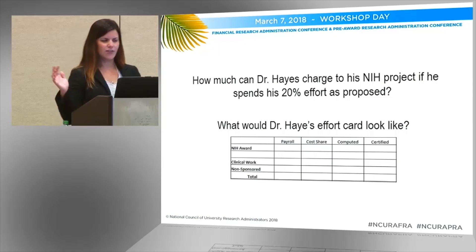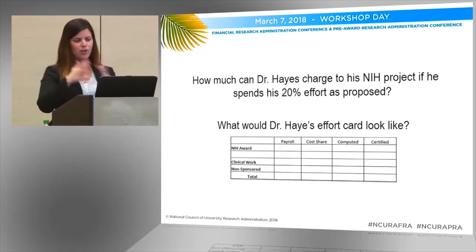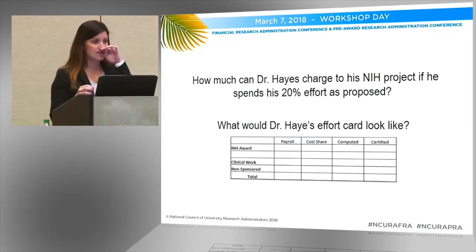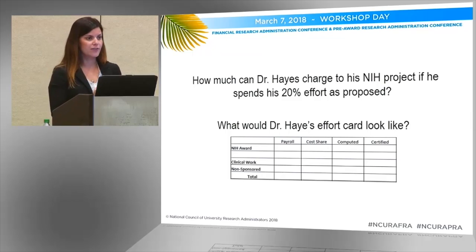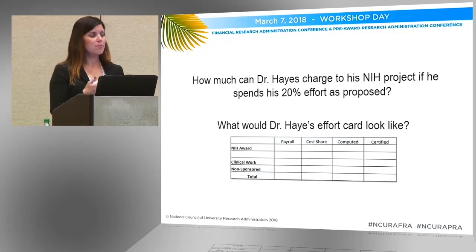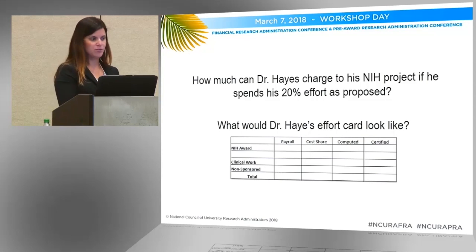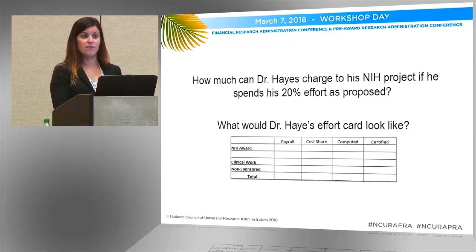This is a hard concept for people to grasp when trying to add in the NIH cap cost sharing to get to this expected level of effort. Some people are thinking that all of their charges don't exceed the cap, so they're not exceeding it. But if you're only putting in 20% effort, the only amount you can list in your proposal is up to 20% — your effort percentage — of the NIH salary cap.